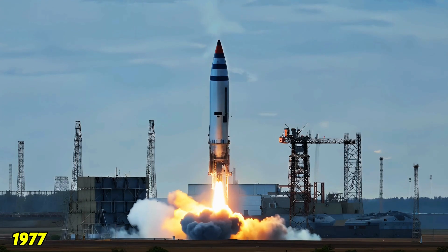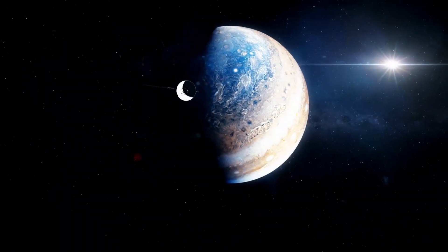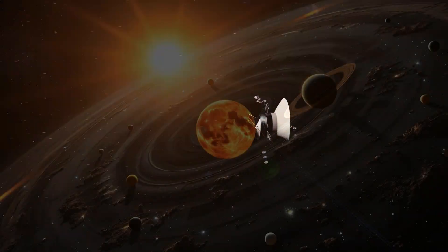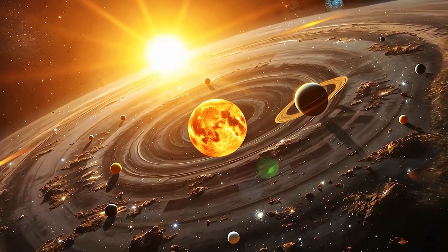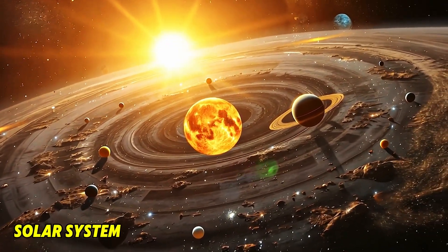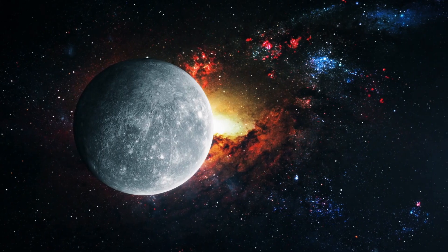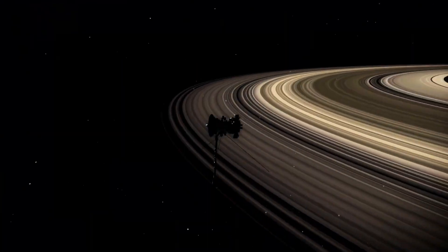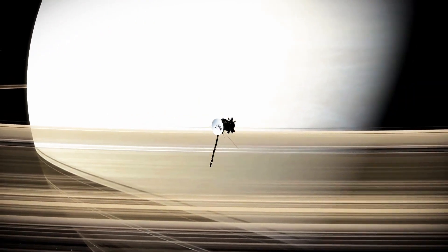In 1977, NASA launched two spacecraft, Voyager 1 and Voyager 2, on an unprecedented mission to explore the far reaches of our solar system and beyond. These twin pioneers were built to uncover the mysteries of our neighboring planets and extend humanity's vision further than ever before.